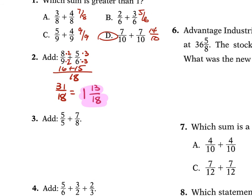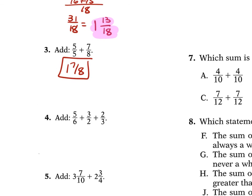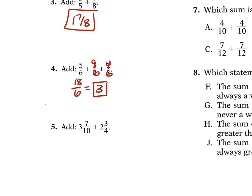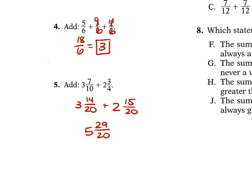Problem 3: 5 over 5 plus 7 over 8 equals 1 and 7 eighths. Problem 4: 5 sixths plus 3 over 2 plus 2 over 3 — LCD is 6. Convert 3 over 2 to 9 over 6 and 2 over 3 to 4 over 6. Adding 5 plus 9 plus 4 over 6 gives 18 over 6, which equals 3. Problem 5: 3 and 7 tenths plus 2 and 3 fourths — LCD is 20, giving 14 over 20 plus 15 over 20 equals 29 over 20. Whole numbers: 3 plus 2 is 5. Together: 5 plus 1 and 9 over 20 equals 6 and 9 twentieths.